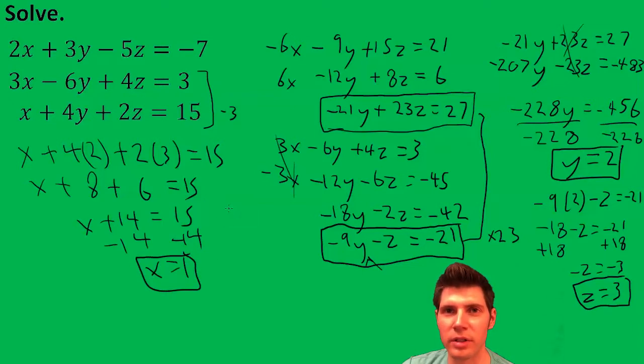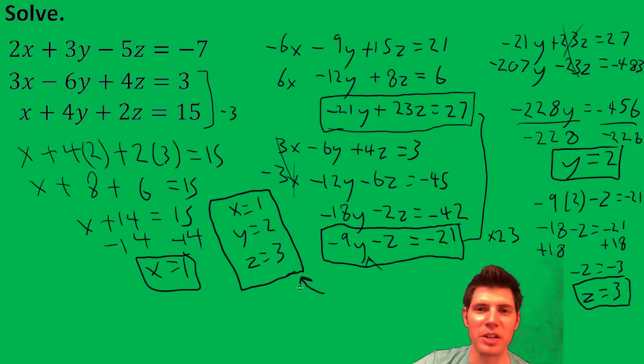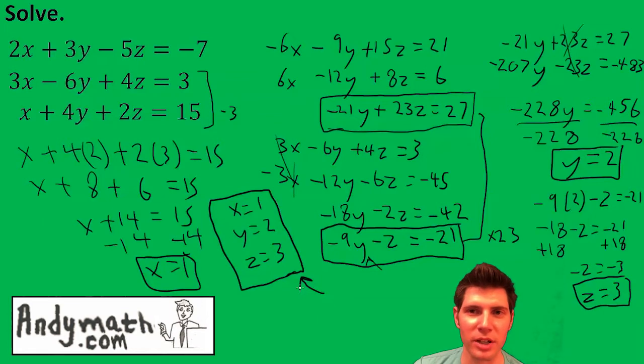So now we have x equals 1, y equals 2, z equals 3. And that is the answer to the question. I hope that makes sense. Please like and subscribe. Check out andymath.com for more videos and study guides. I'll talk to you guys soon. Bye.